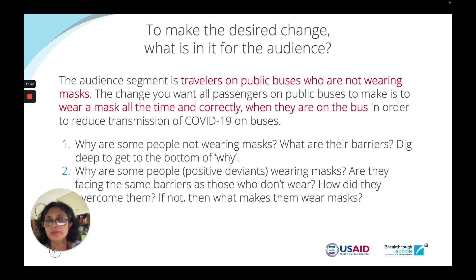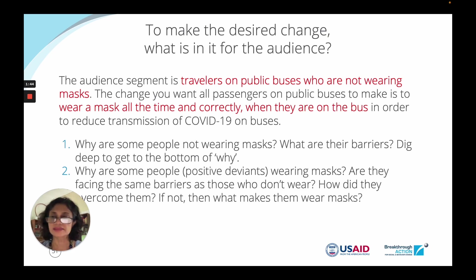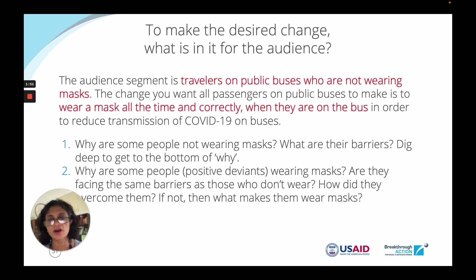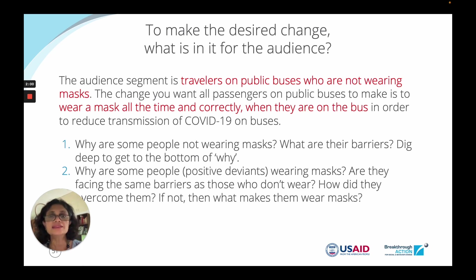The second point is: why are some people positive deviants? Why are some people wearing masks? What's the reason they do wear masks? Are they facing the same barriers as those who don't wear masks, and how did they overcome those barriers? If not, then what makes them wear masks? It's as important to understand why people do practice a positive behavior as it is to understand why some people do not.